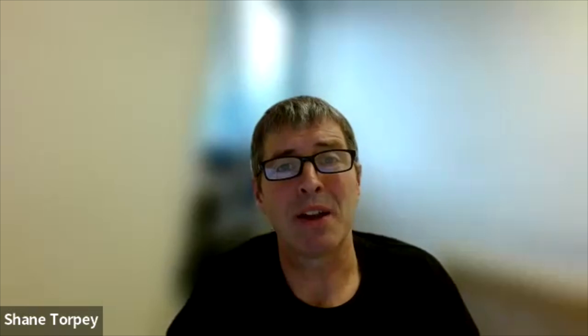We've heard about red light, blue light, and green light in previous videos tied into PAR and lighting in general. Now we're diving into far red light. So what is far red light? We have the strict PAR range, which is from blue to red — 400 to 700 nanometers — and that's what we measure as causing photosynthesis in plants. Just beyond 700 nanometers, from 700 to 750 nanometers, is where far red radiation is. This is just about visible.